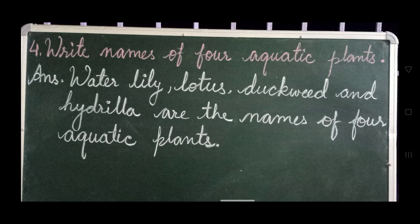Number 4: Write the names of four aquatic plants. The four aquatic plants are water lily, lotus, duckweed, and hydrilla. These names are easy to read, easy to spell, and easy to remember.